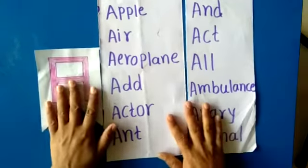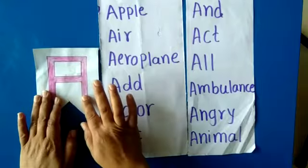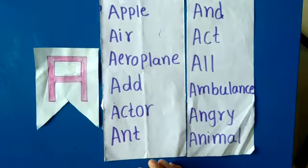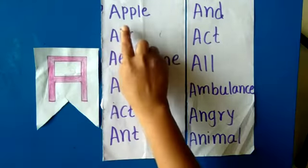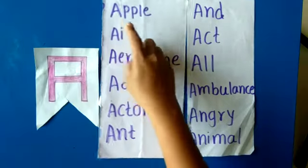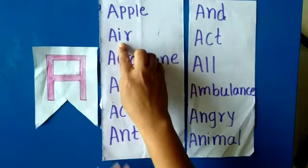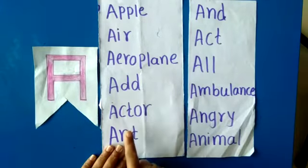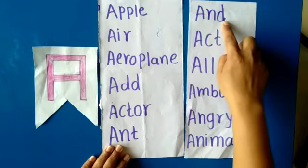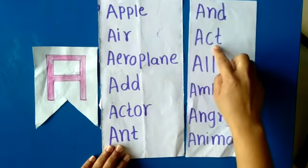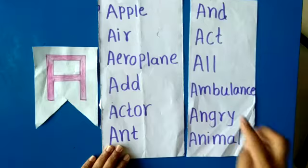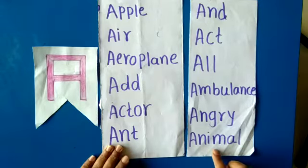Here we will learn alphabet A and words that start with the letter A: Air, Aeroplane, Ad, Actor, Ant, Act, All, Ambulance, Angry, Animal.